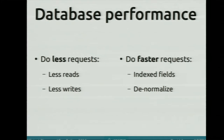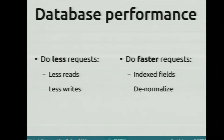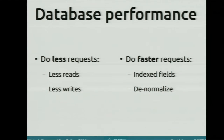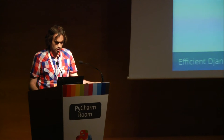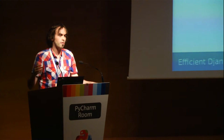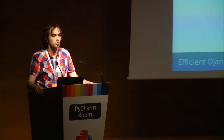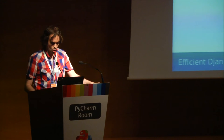To improve database performance, on one hand, you have to do fewer requests, and on the other, you have to make faster, more efficient requests. Doing fewer requests means doing fewer reads and fewer writes — you can achieve this with caches. For faster requests, you can index fields, and you can denormalize your models. Denormalizing means you have some pre-calculated data inside the model, so you don't have to do expensive operations all the time.